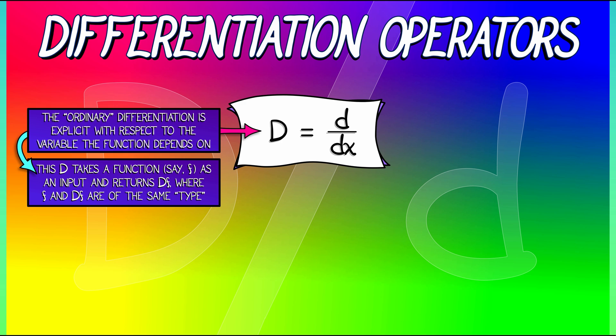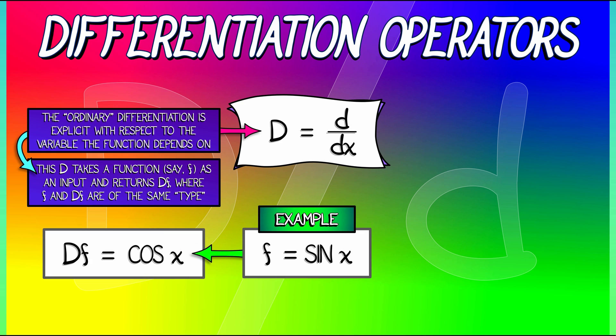The ordinary derivative of a function is, again, a function. So for example, if I take f equals sin of x, what is df? This capital D applied to f is the derivative. It's cosine of x. And it's a function just like f.